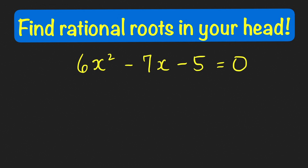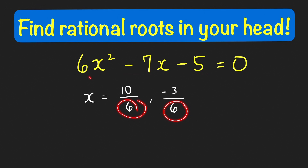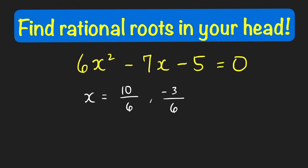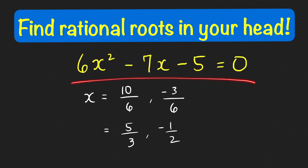Those are positive 10 and negative 3. So in this case, I know already that the roots are 10 over 6 and negative 3 over 6. This 6 here is just the coefficient of the x squared term. And these solutions can be simplified to 5 over 3 and negative 1 half. You can check that these are indeed the solutions of this quadratic equation.